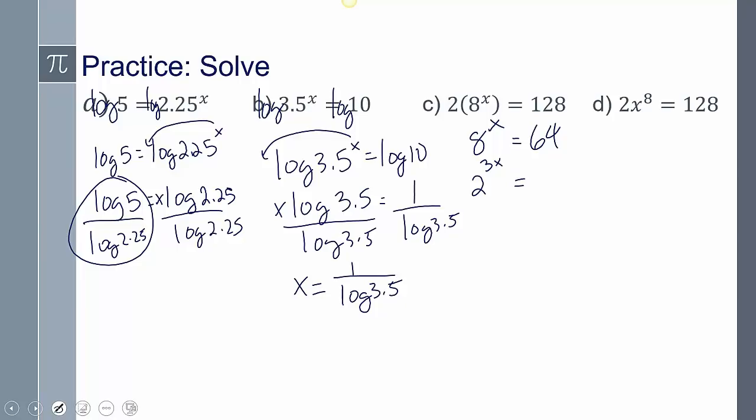64. 2 times 2 is 4, times 2 is 8, times 2 is 16, 32, 64. So 2^6. Bases are the same. 3x = 6. Divide both sides by 3. x equals 2. So in that one right there, I didn't have to do anything.